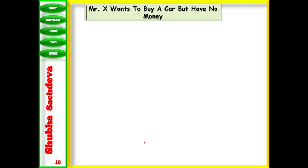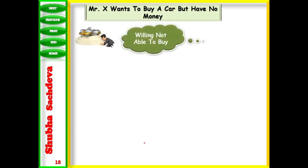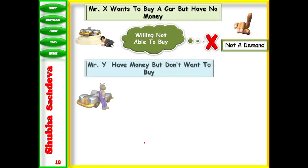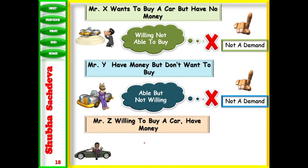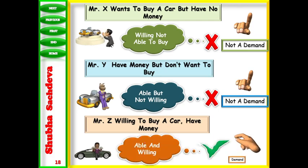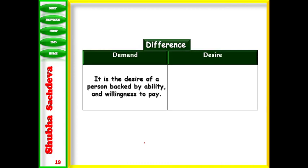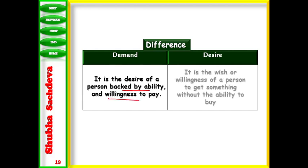Let us see some examples. Mr. X wants to buy a car but has no money. He is willing but not able to buy, so it is not a demand. Mr. Y has money but doesn't want to buy a car. He is able but not willing, so it is also not a demand. Mr. Z is willing to buy a car and has money also to buy the car. He is able and willing - that means it can be converted into demand. This we can call demand.